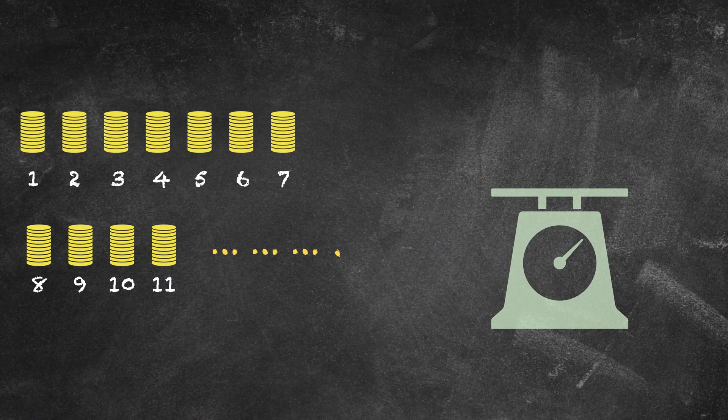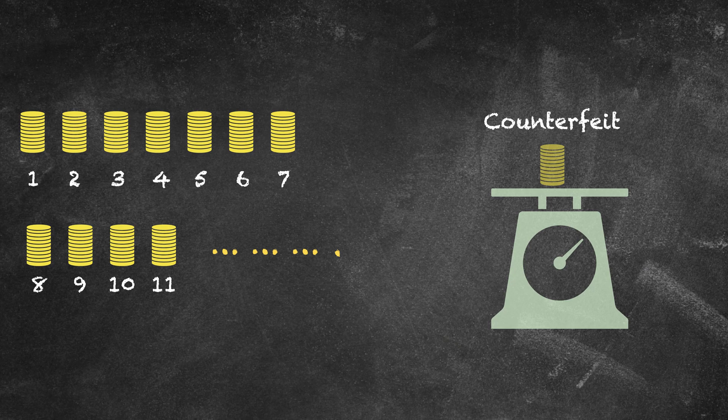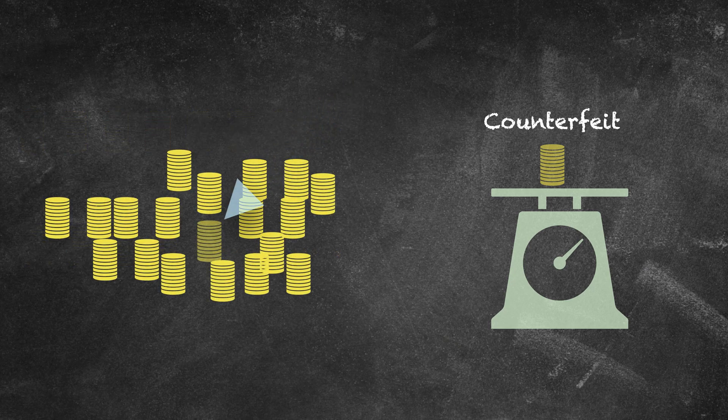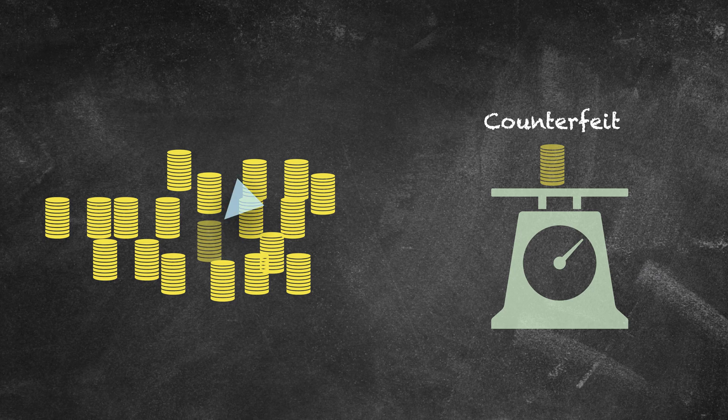Ideally, we would like to pick exactly the counterfeit stack at the first draw and place it on the scale, but this is not possible because the probability to draw the counterfeit stack at the first draw is very low.